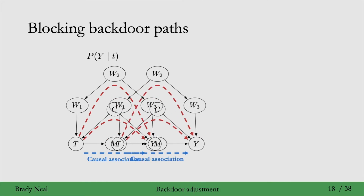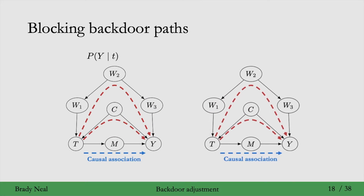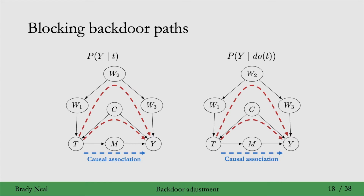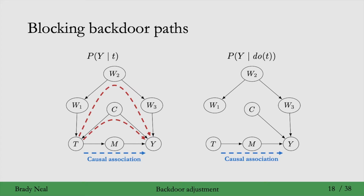If we replicate this graph and look at the interventional distribution, p of y given do(t), because we're intervening on t, we actually remove all of the incoming edges to t. That removes all of these backdoor paths, because now there are no incoming edges to t. So when we intervene on t, it's really easy to isolate the causal association.